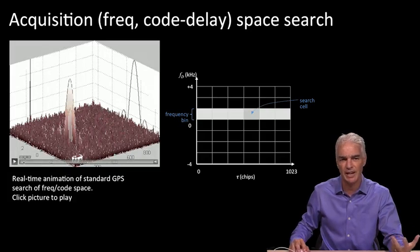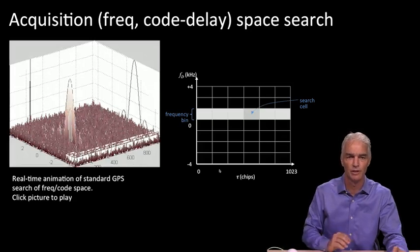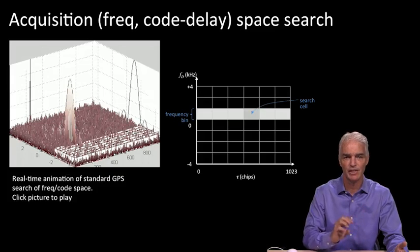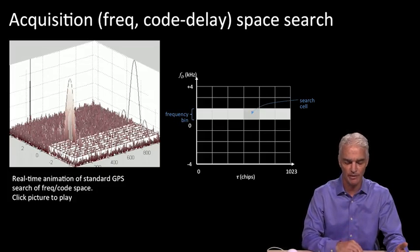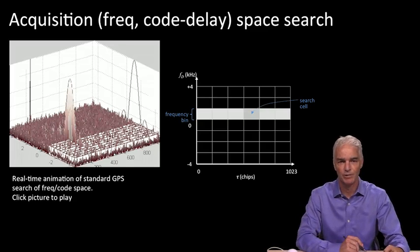For a traditional receiver — like a hiking receiver or some kind of receiver you may have had in a car a few years ago — when it switches on, the receiver would start searching one bin and search at about this rate across different bins until the amount of energy coming out of the integration part was above some threshold. Then the receiver would know it had found the signal.